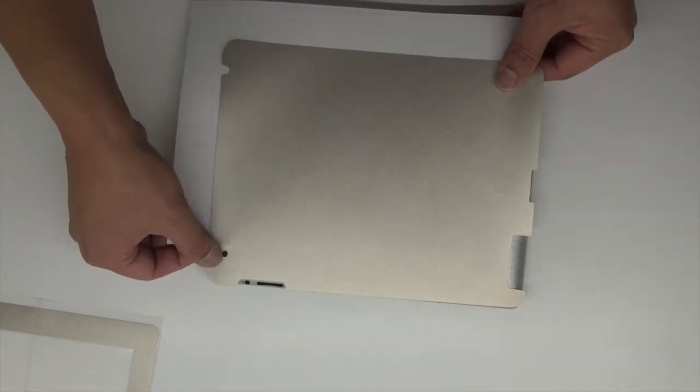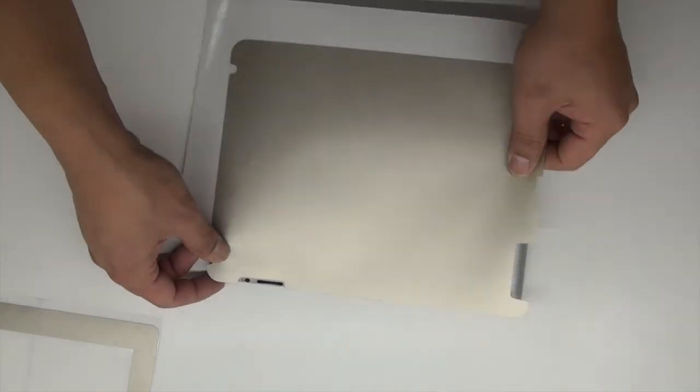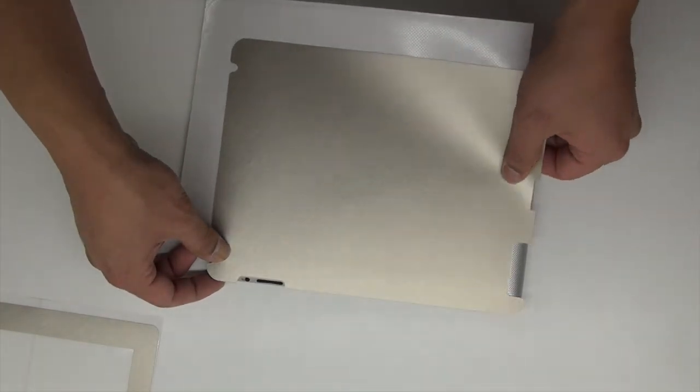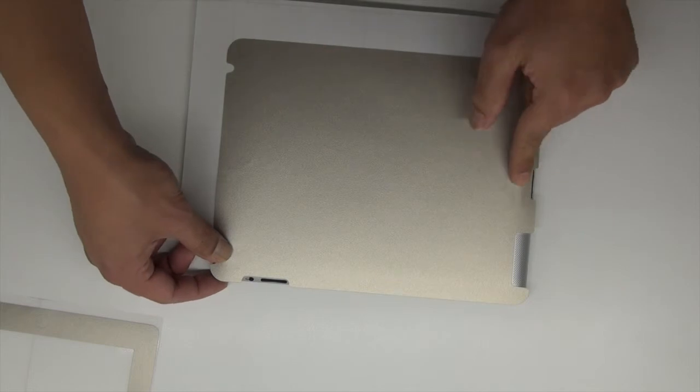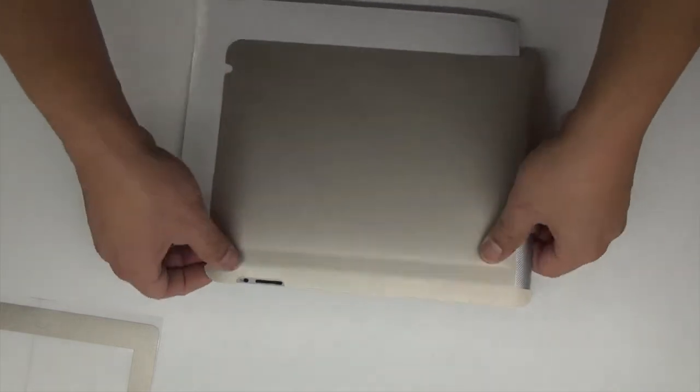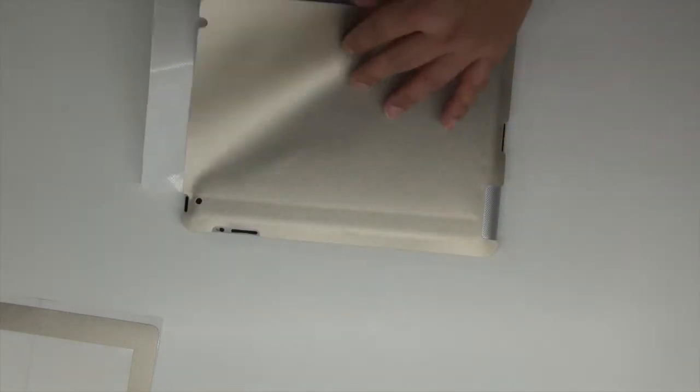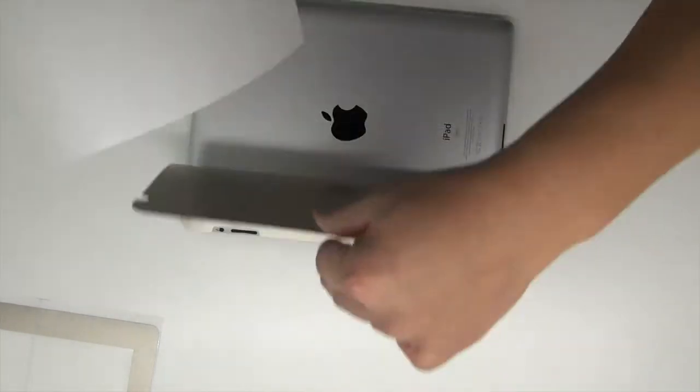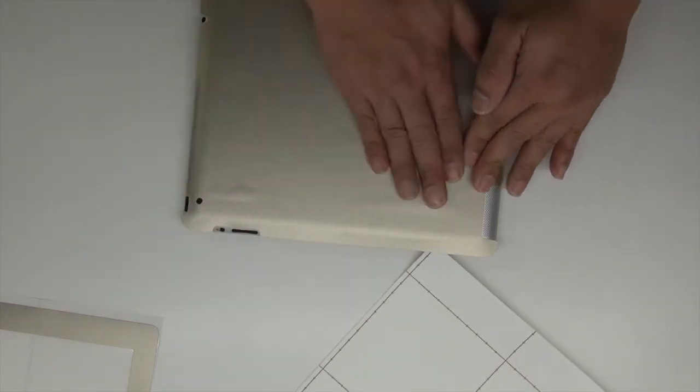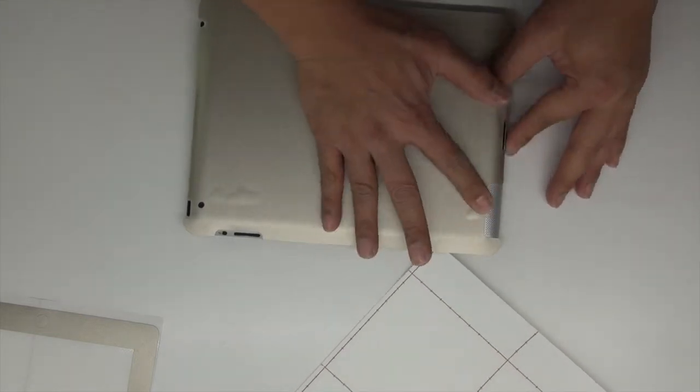These exposed sections you want to use as your pivot points to keep the back skin flat and even against the iPad. Start by centering the camera and then guide and align it around the speaker cutout. Once that side is nice and centered, press the exposed area down onto the iPad, lift and remove the rest of the wax backing, and the rest of the back skin should align itself into place.